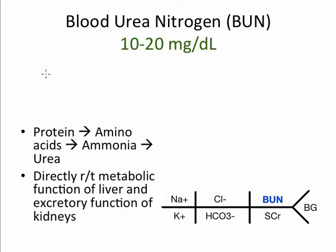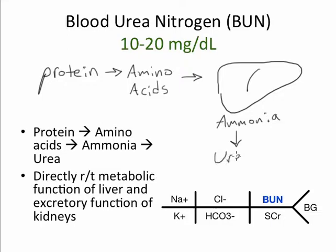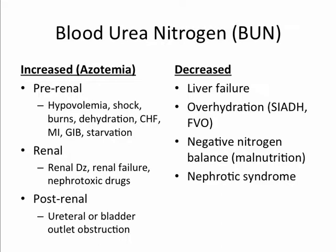Urea is formed in the liver as an end product of protein metabolism. Protein is broken down into amino acids, which moves to the liver and is converted to ammonia, then converted into urea, which is ultimately excreted by the kidneys. The blood urea nitrogen is directly related to the metabolic function of the liver as well as the excretory function of the kidneys. BUN is often increased in conditions involving the kidneys, broken down based on where they occur: prerenal, renal, and post-renal. The BUN can also be elevated in dehydration, and may be decreased in liver failure, overhydration, negative nitrogen balance referring to protein malnutrition, and nephrotic syndrome.